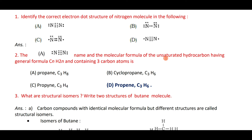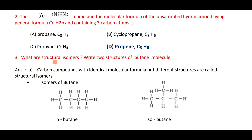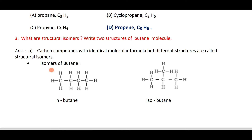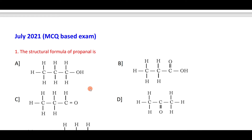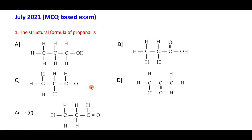The unsaturated hydrocarbon with general formula CₙH₂ₙ containing three carbon atoms is propene — C₃H₆. Structural isomers are carbon compounds having the same molecular formula but different structures. The two structures of butane are normal butane and isobutane.